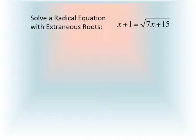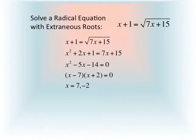For instance, when we square both sides of the equation x plus 1 equals the square root of 7x plus 15, we're going to have to square a binomial. On the left side, we end up with the perfect square trinomial x squared plus 2x plus 1 equals 7x plus 15. If we combine all terms on the left and set the equation equal to 0, we have x squared minus 5x minus 14 equals 0, which factors and gives us the solutions x equals 7 or x equals negative 2.